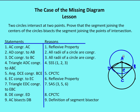Now I'm trying to prove that the segment joining the centers, AC, bisects the segment joining the points of intersection, which is going to be D and B. So first I'll say that AC is congruent to AC — that's the reflexive property. Then I'll say that AD is congruent to AB, and DC is congruent to BC.